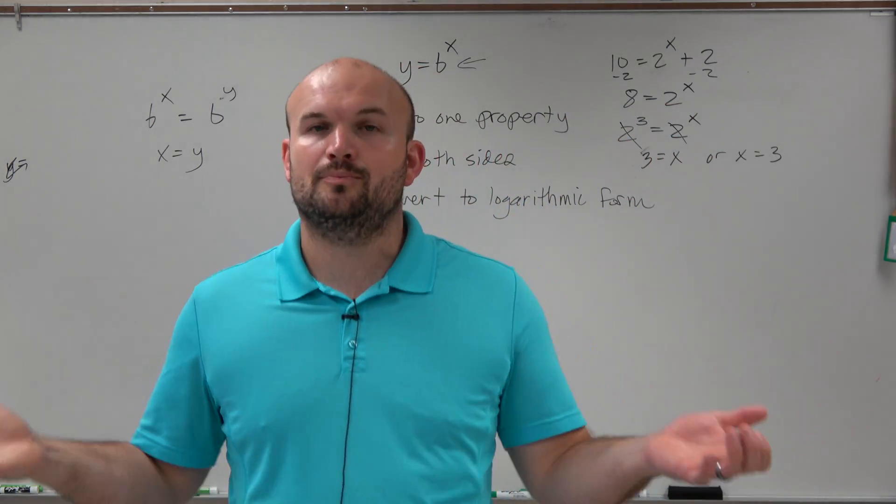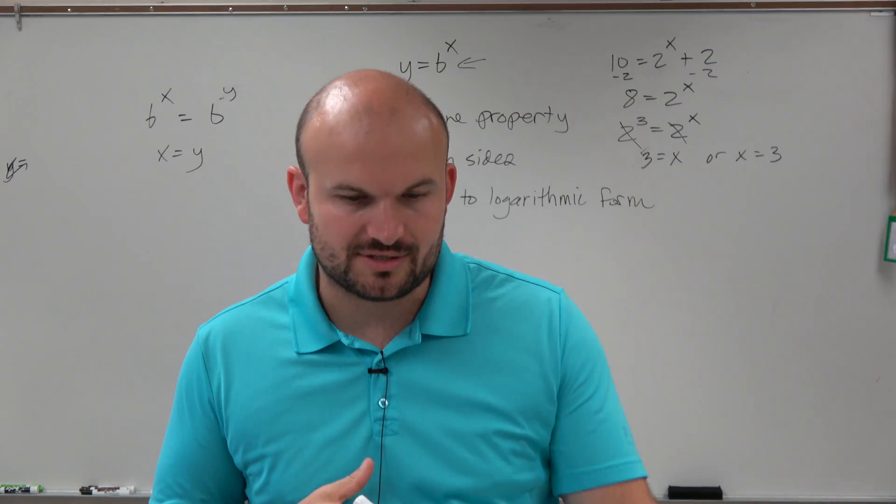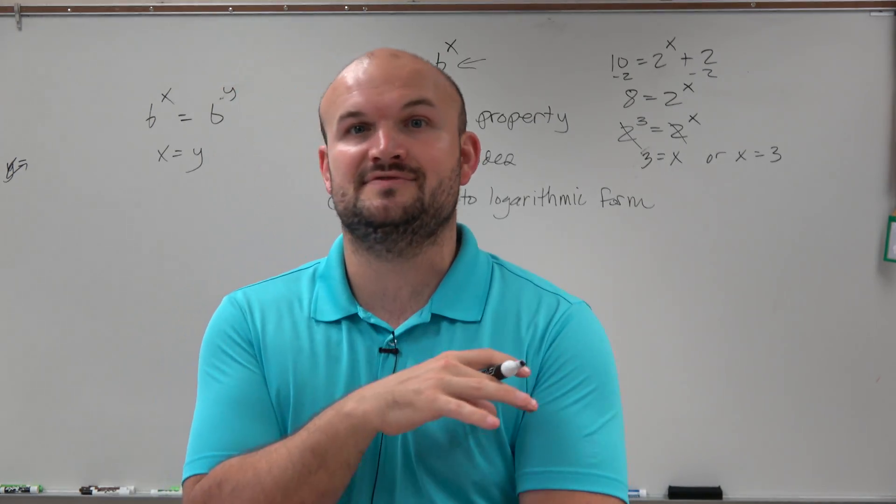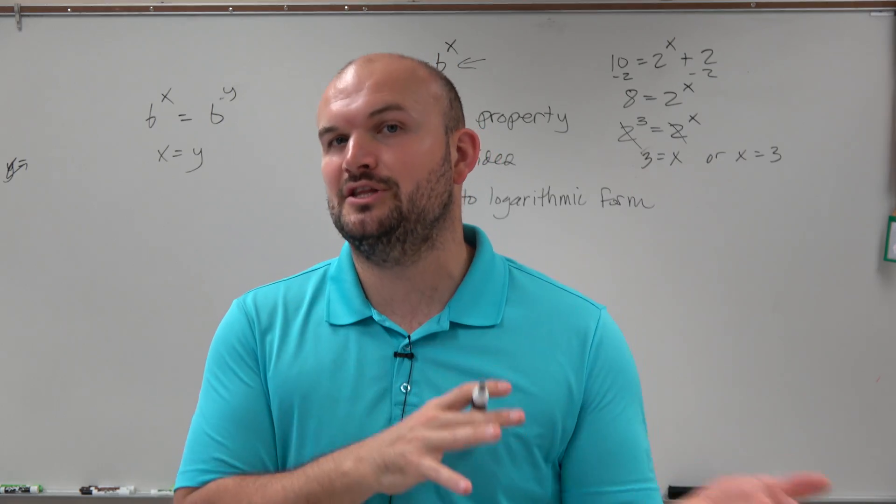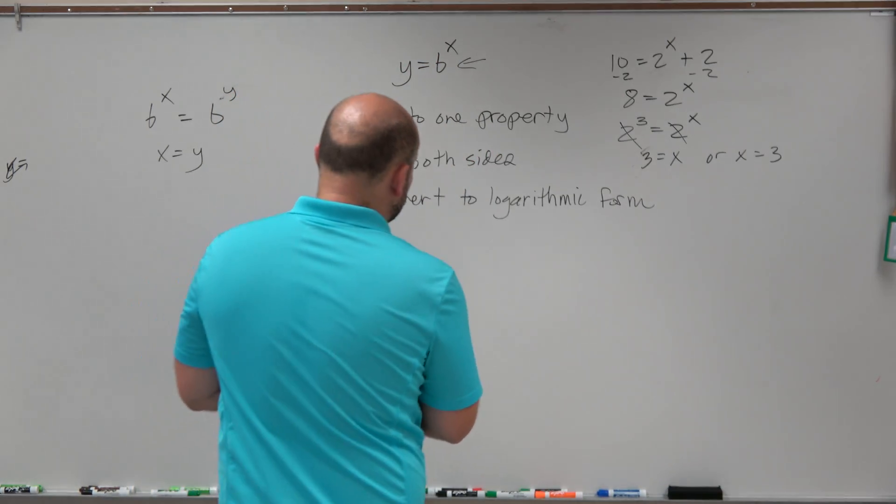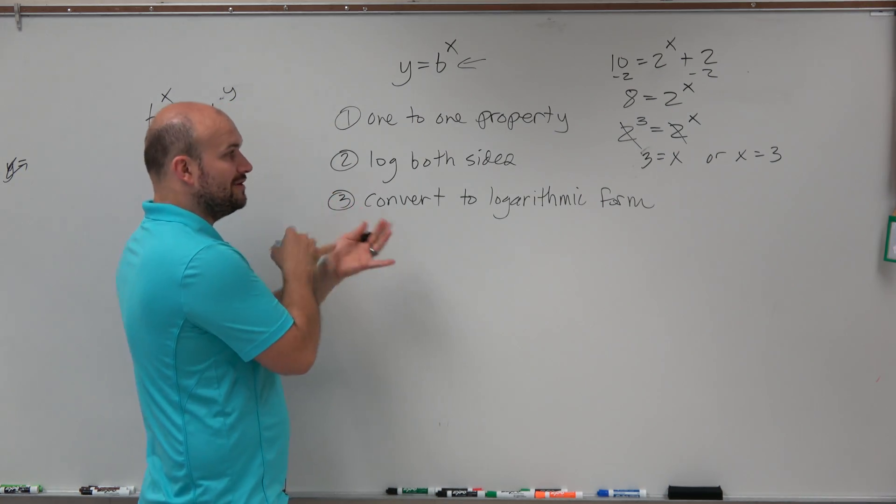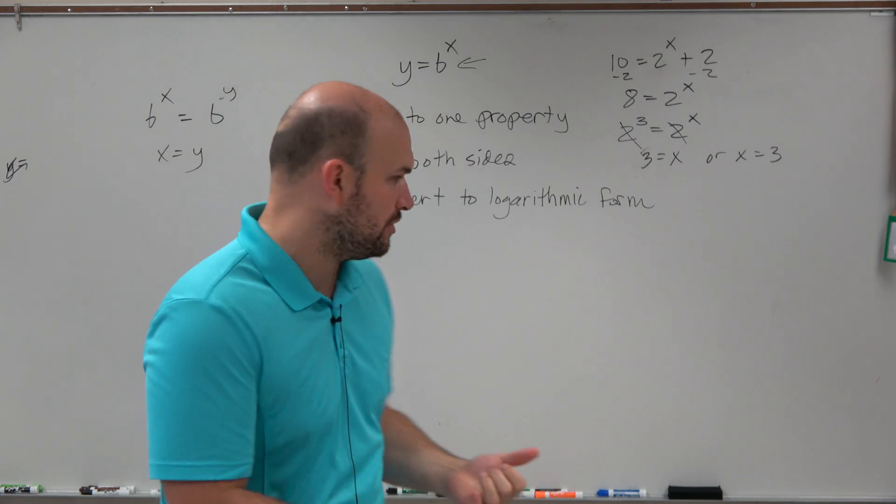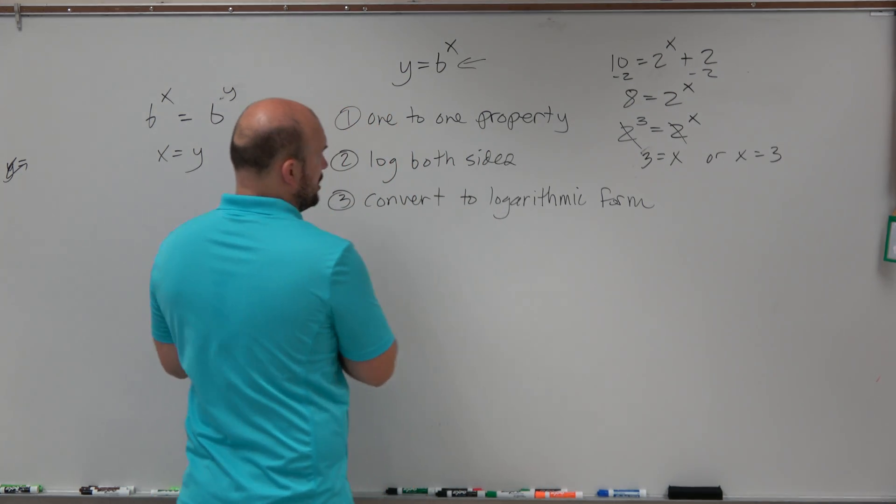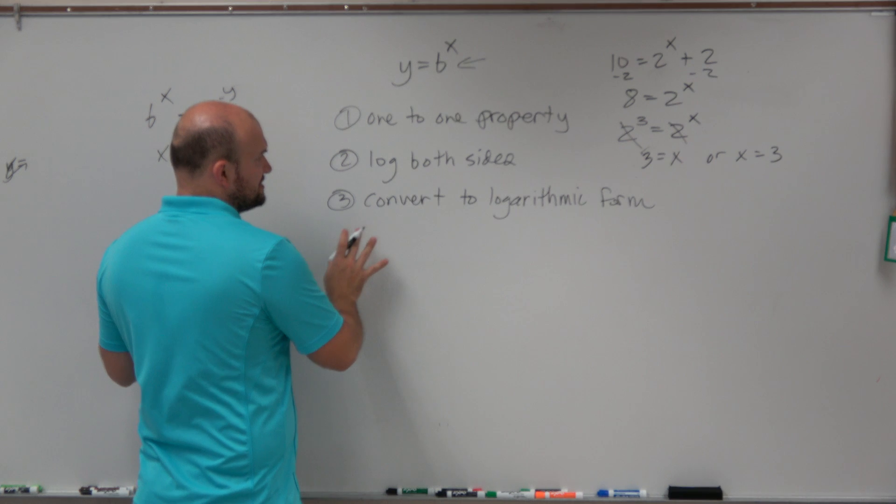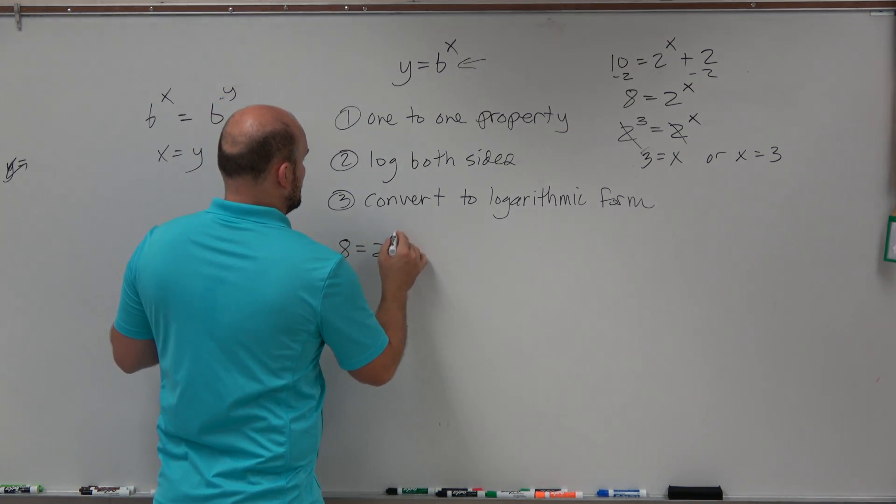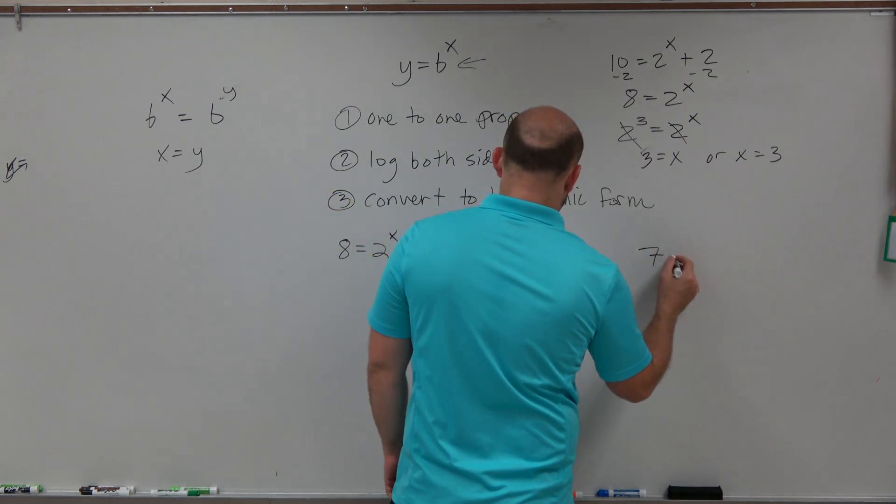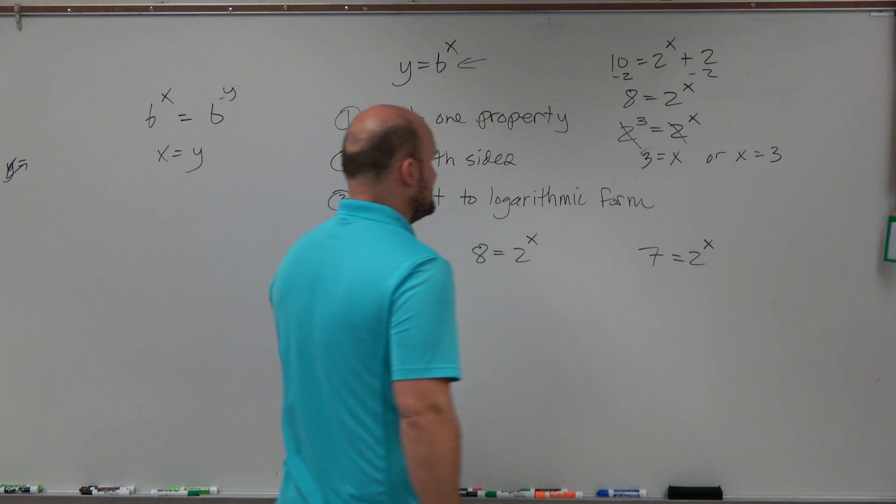Now, that would be your non-calculator portion. So if you have some problems and you see that the numbers kind of look like they're being raised to powers, even with their fractions or negatives, if you kind of see them similar, more than likely, you can use the one-to-one property to go ahead and solve. However, you could also, if maybe you're stuck and you're like, ah, I just can't figure this one out, you can always still use our calculator portion, which would be taking the log of both sides or converting to logarithmic form.